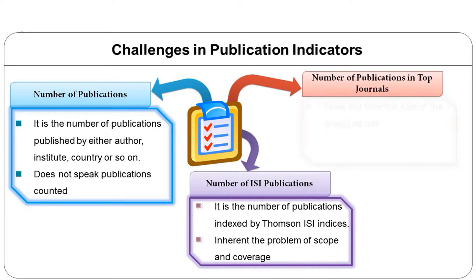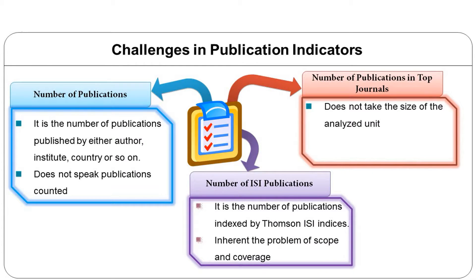The third publication indicator is number of publications in top journals — the number of publications the analyzed unit has published in a selected number of journals during the analyzed time span, with the selection of journals made on some criteria. The advantage is that data collected from top journals shows relative importance among others in the group. It is a better count than a mere publication count, but it also has limitations: it does not take the size of the analyzed unit into account and has limitations of the selection criteria. Although this approach may look like a performance indicator, it was designed to address the shortcoming of the above-mentioned quantity indicators.